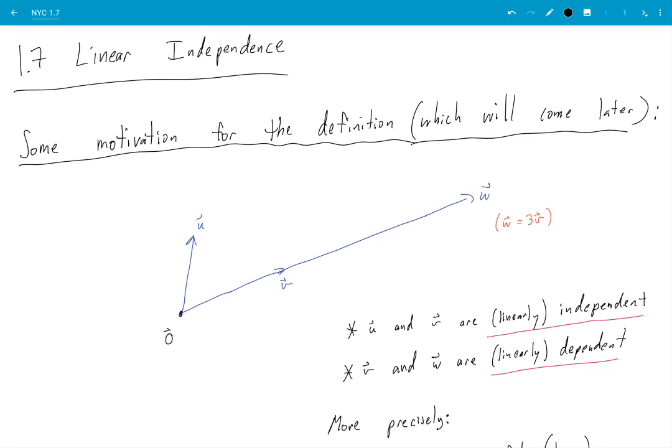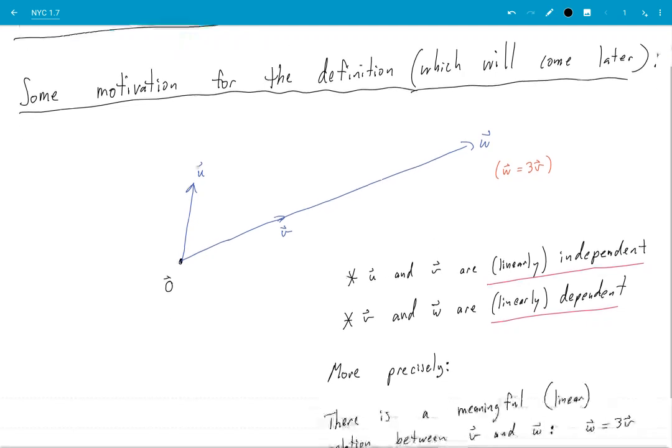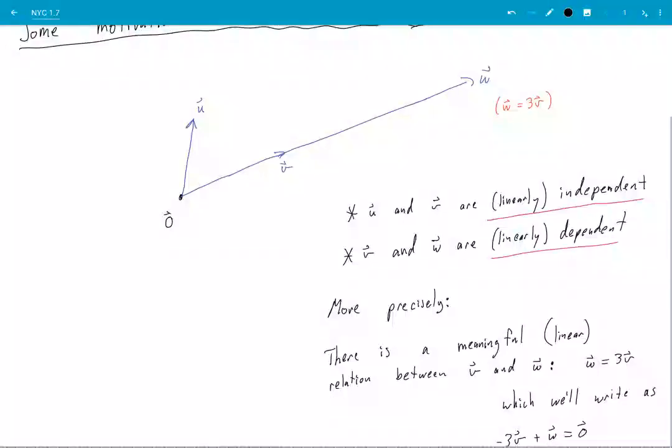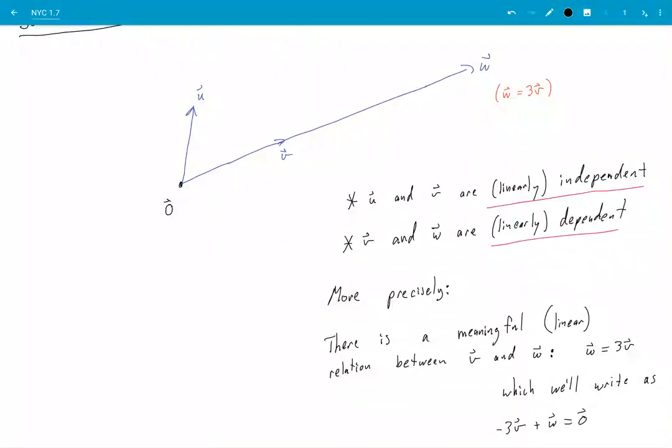So u and v are independent, and v and w are dependent. Okay, we're going to be more precise about that. So pause the video and write all this stuff down.